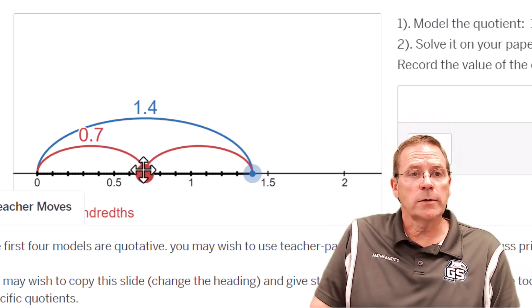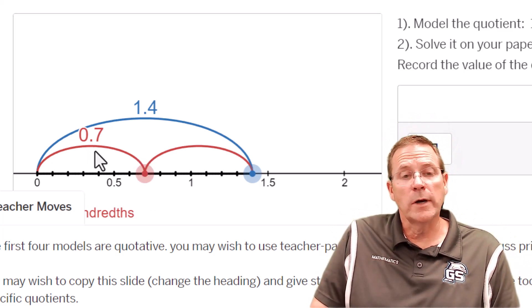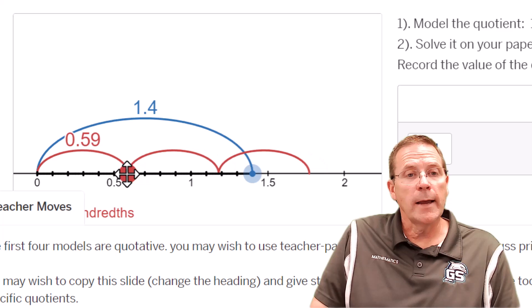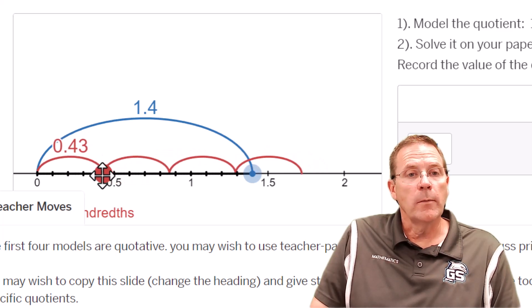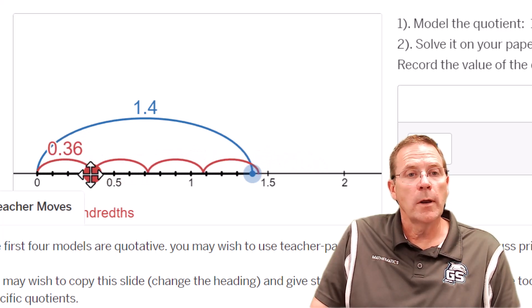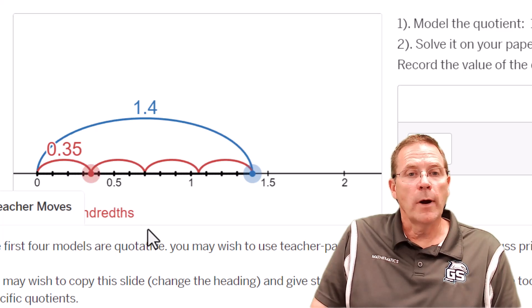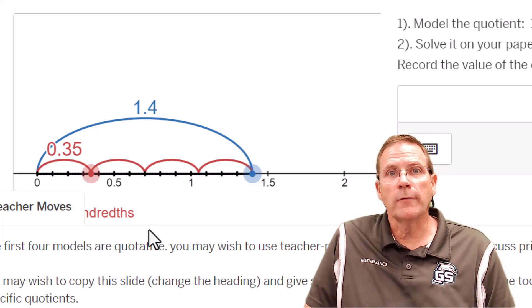We need 0.35 sections, so we're not there yet, we're only at 0.7. So we're going to need to drag it down some more, keep going, keep going, and boom, right there you have 0.35 sections.